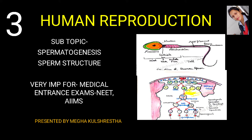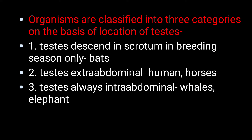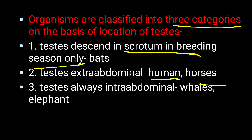Watch this video till the end — I assure you that you will easily understand all these terminologies. Just as general information, on the basis of the location of testes, organisms are classified into three categories. First, testes descend into the scrotum in breeding season only — example is bats. Second, testes are extra-abdominal — example is humans and horses. Third, testes are always intra-abdominal — example is whales and elephants. Just for your knowledge, no need to learn it.